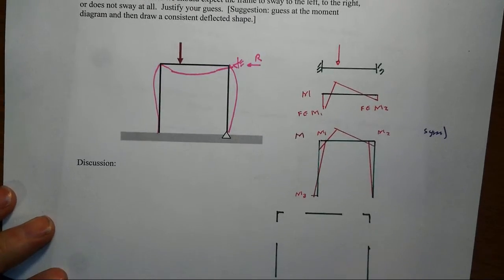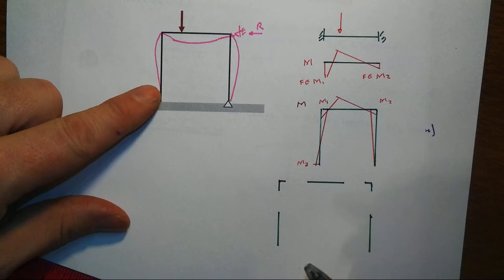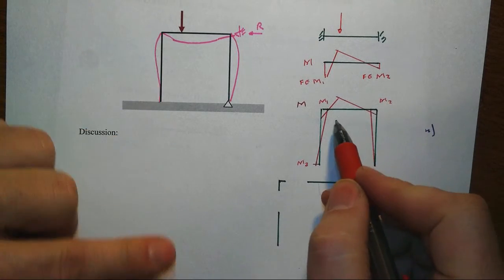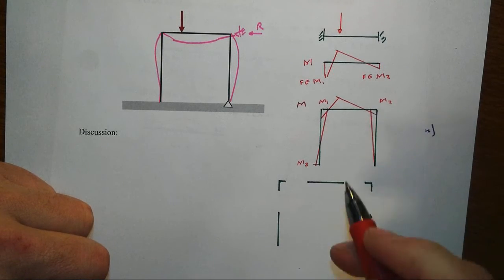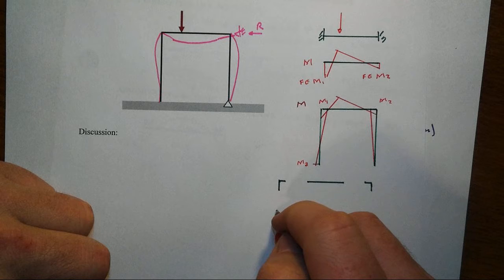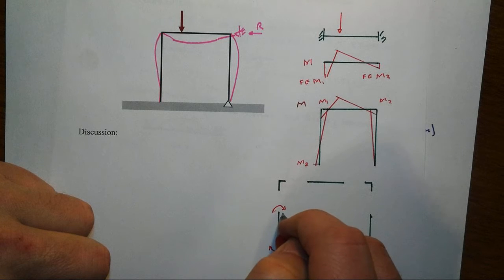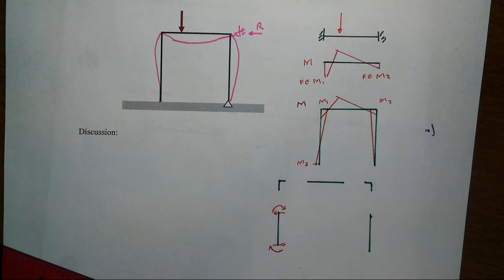And we can kind of get insight into that by taking a look at what is going to happen with the moments. The moment diagram we might anticipate is something like you see here, reverse curvature in the left. That means that at the top of the column, we're going to get two moments that act in the same direction. We'll have to have shear forces that oppose that, put that into equilibrium.